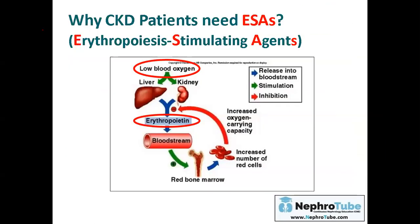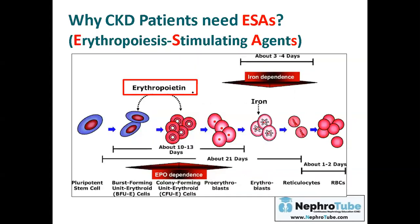Why do chronic kidney disease patients need erythropoietin stimulating agents? Normally, if there is hypoxia in our body, this stimulates both the liver and kidneys — mainly the kidneys — to release erythropoietin hormone, which plays an important role in the formation of red blood cells by the bone marrow. In chronic kidney disease patients, the release and formation of erythropoietin hormone is decreased by the diseased kidney tissue.